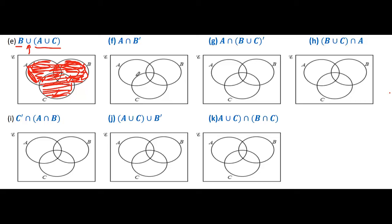Here we have three sets in the Venn diagram but in this expression we have two sets. First we identify A — this is region of A, A, A, A. B complement means outside of B. This is the B region; what is outside of B? These regions are outside of B. As there is intersection between them, we shade only where double ticks are present. So these two areas are the double tick region — this is our final answer.